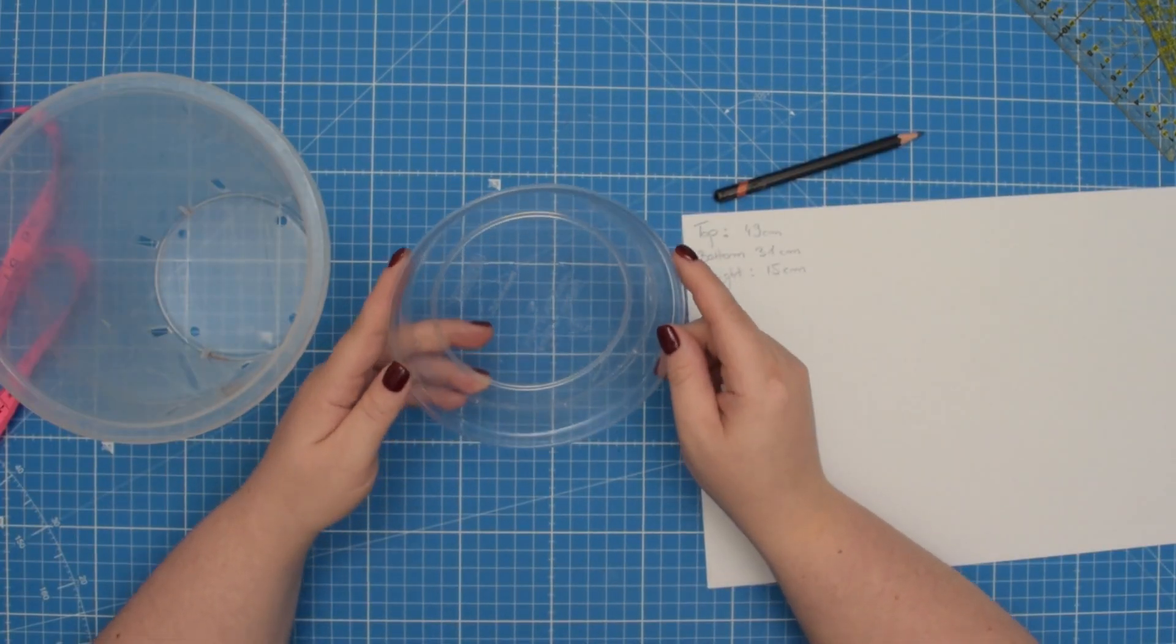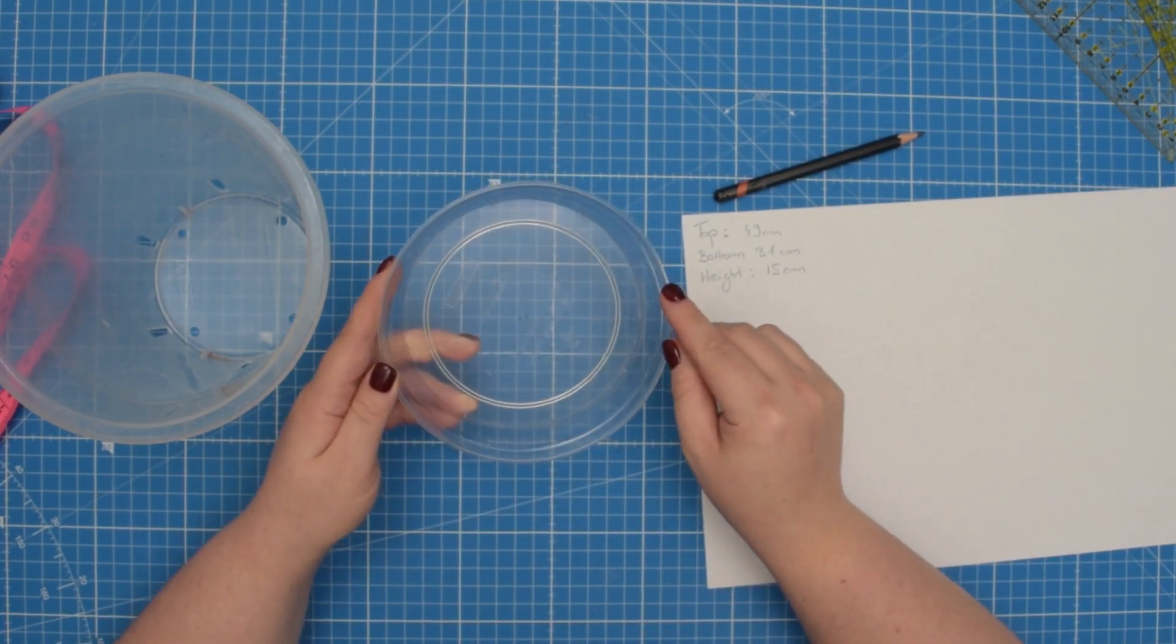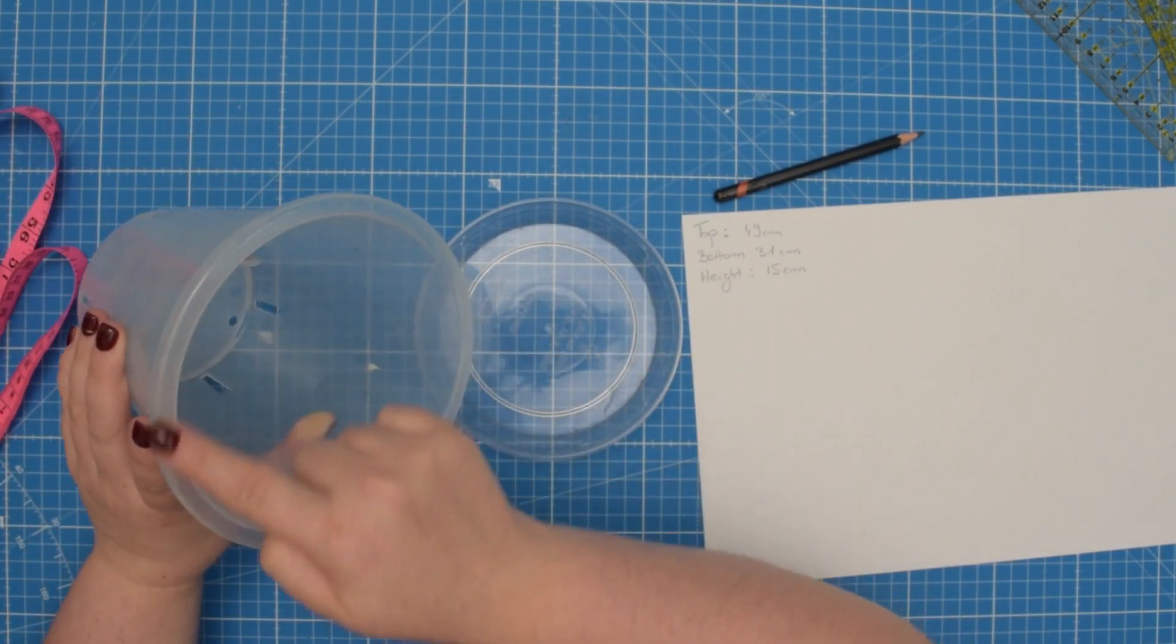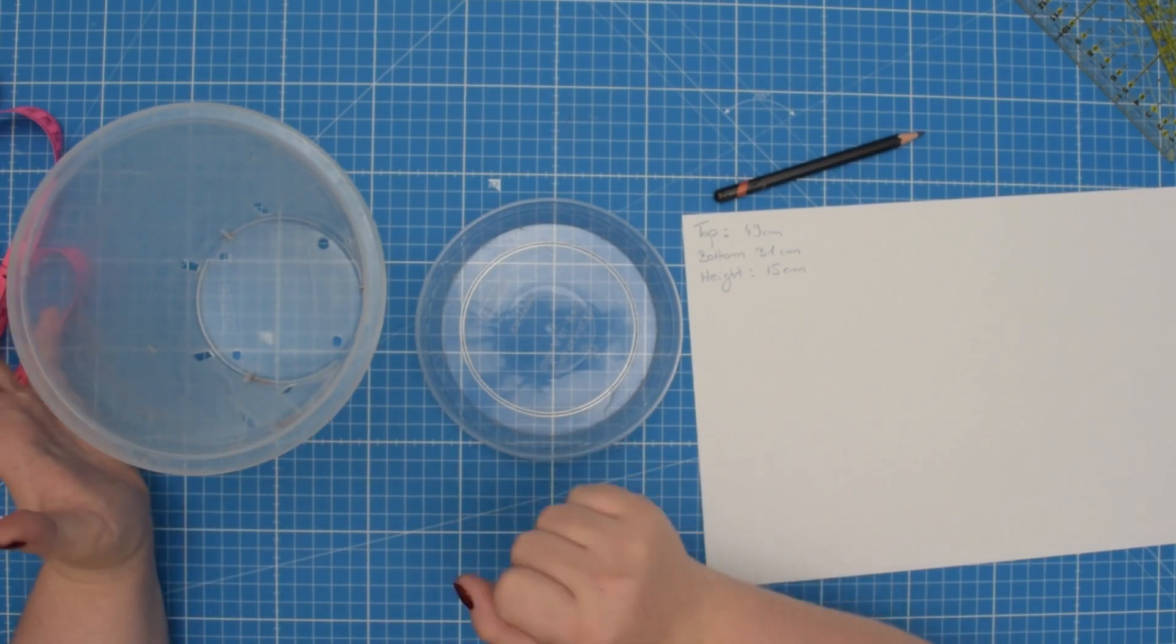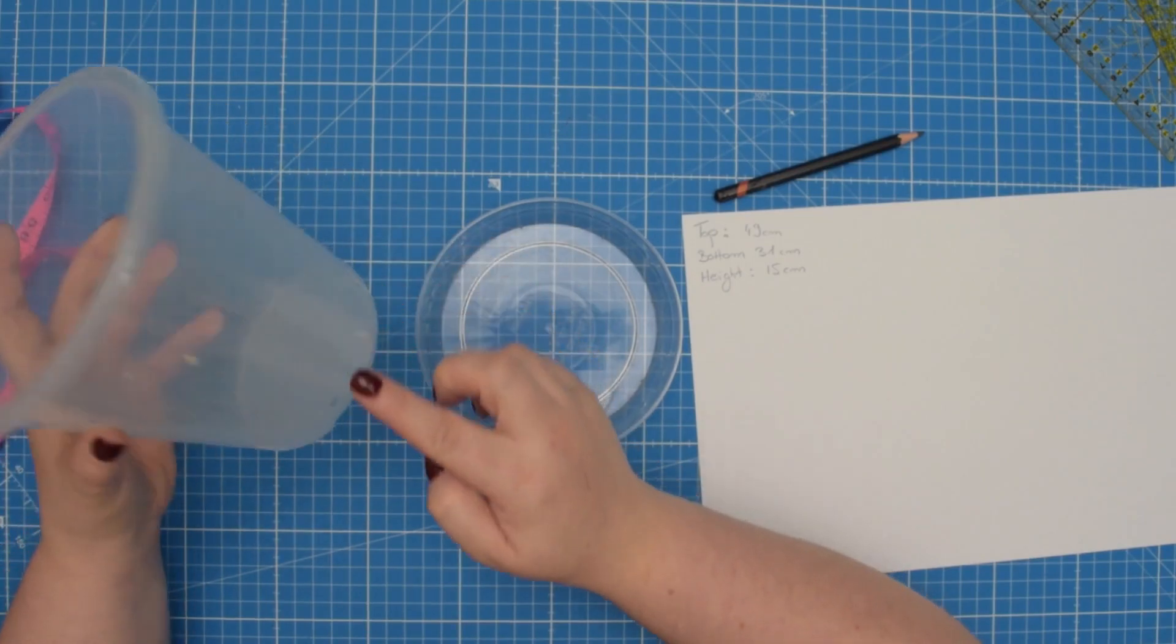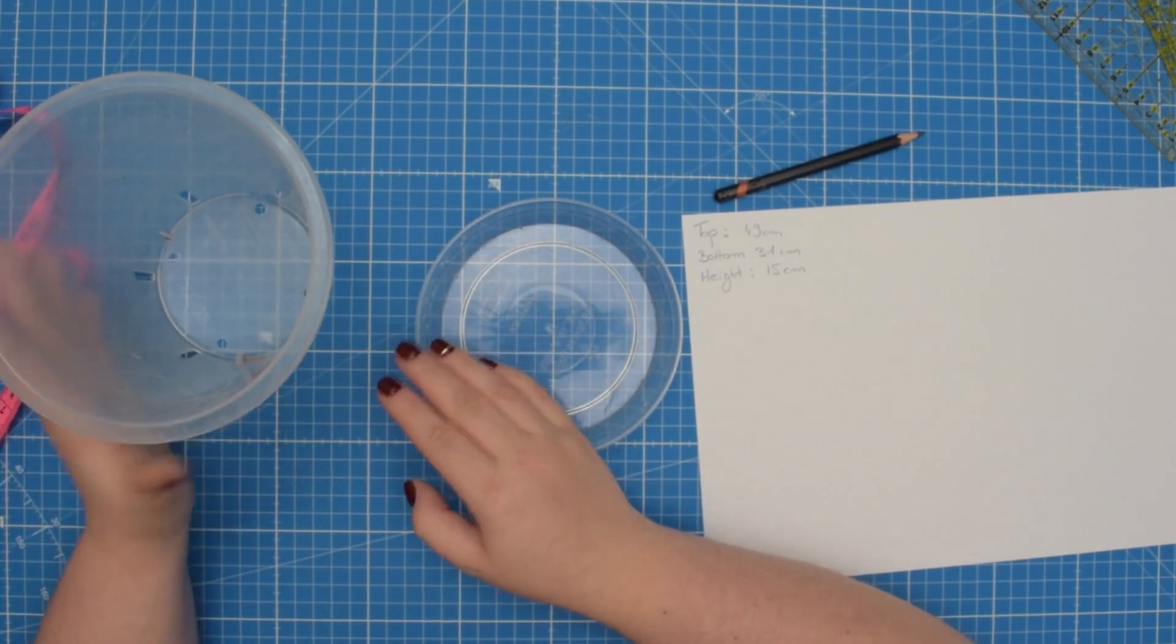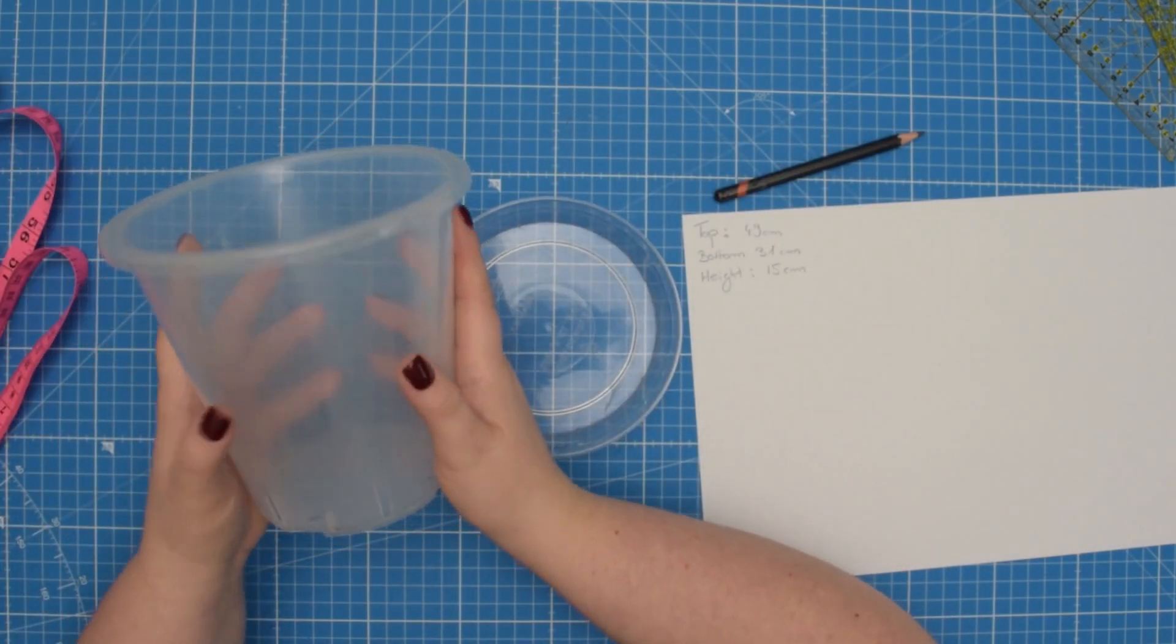For the purpose of this tutorial I'm going to ignore the tray because the circumference of my tray is very similar to the circumference along the top edge of my pot and I want to show you how to draft a pattern when those two measurements are significantly different. So we're going to create that shaping to our pattern.